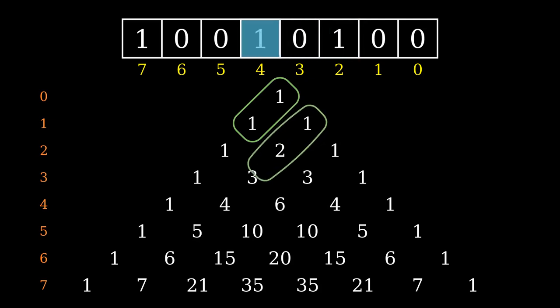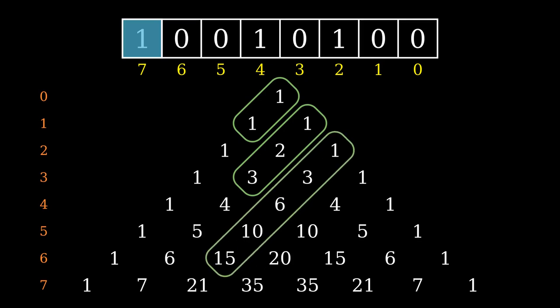And for the third 1 bit, add up the third diagonal column, stopping just short of the seventh row.